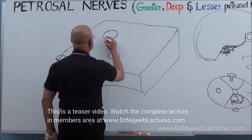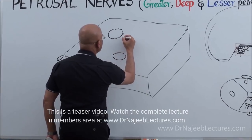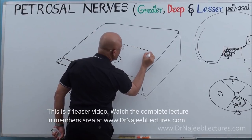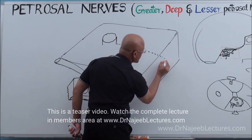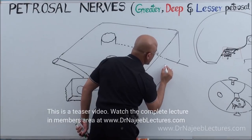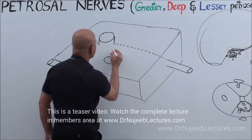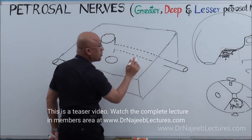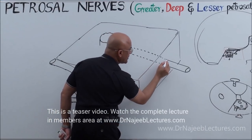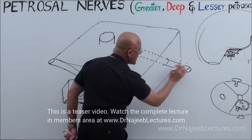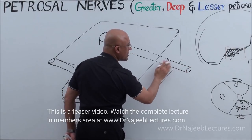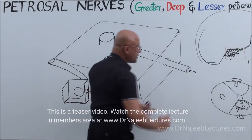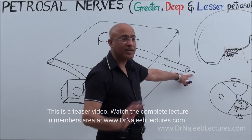A few more structures to mention: in the anterior wall of foramen lacerum there is a canal going anteriorly — the pterygoid canal. This passes within the bone and emerges from it, opening into the pterygopalatine fossa.